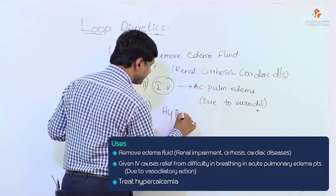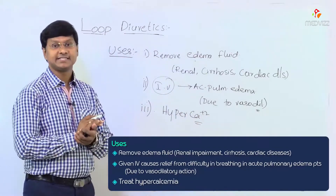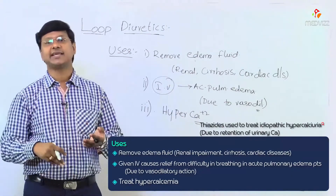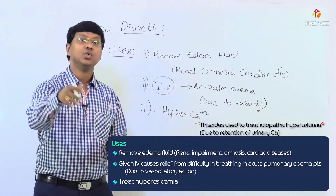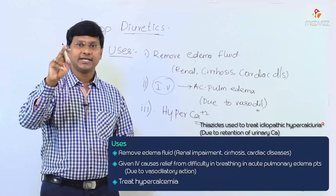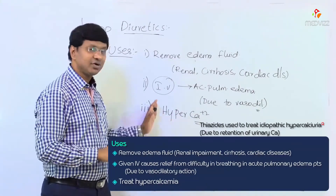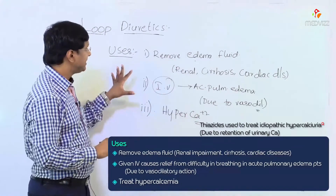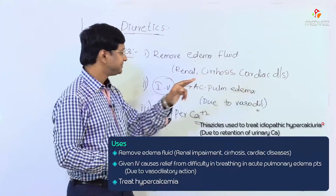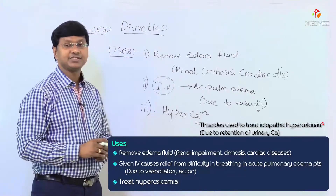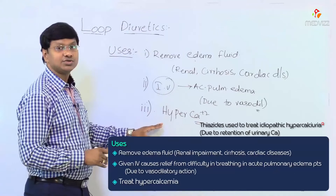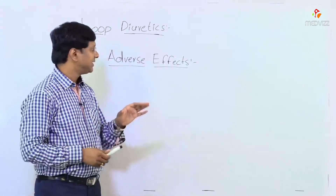Loop diuretics cause excretion of calcium and are therefore used in the treatment of hypercalcemia. Contrast this with thiazide diuretics, which retain calcium — thiazide diuretics are used in idiopathic hypercalciuria, whereas loop diuretics are used in hypercalcemia. In summary, loop diuretics are used for: removal of edema fluid due to renal, liver, or cardiac pathology; acute pulmonary edema (IV, via vasodilatory action); and treatment of hypercalcemia.